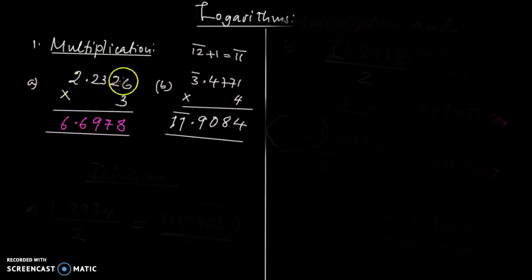I have already prepared two examples here. When we multiply, this is a logarithm where the characteristic is positive and the mantissa is also positive. This is what we call a mantissa and this is our characteristic—they are all positive. So when we multiply, we just multiply normally: 3 times 6 is 18, carry 1; 3 times 2 is 6 plus 1 is 7, and so on. We have the answer there.